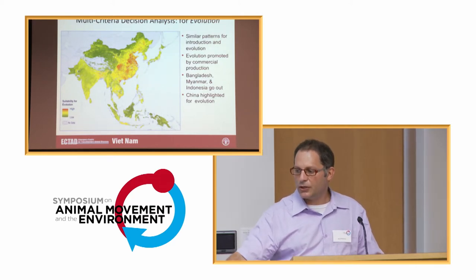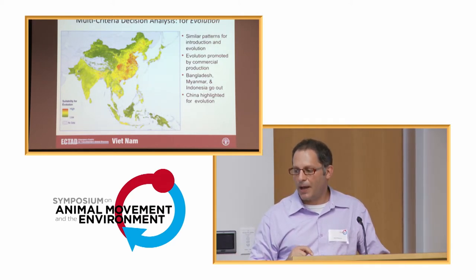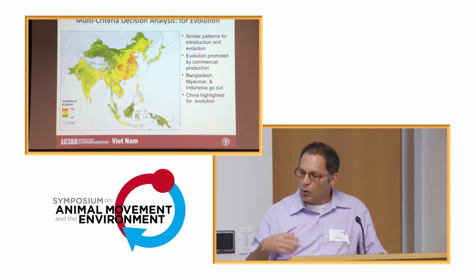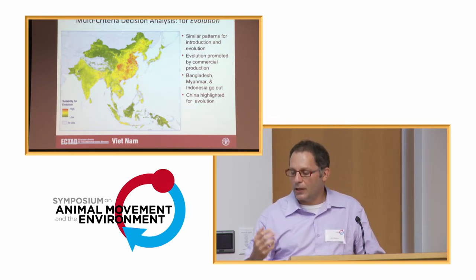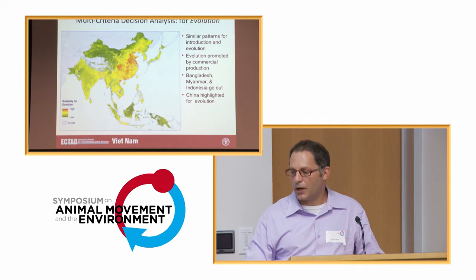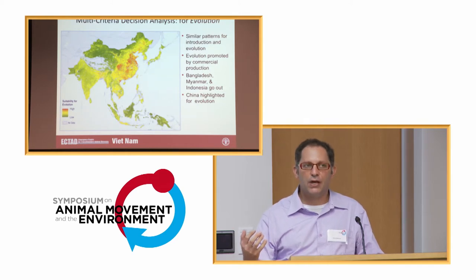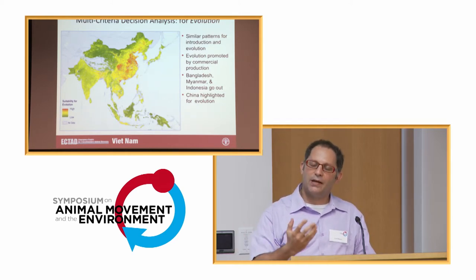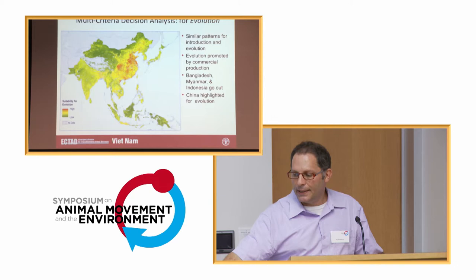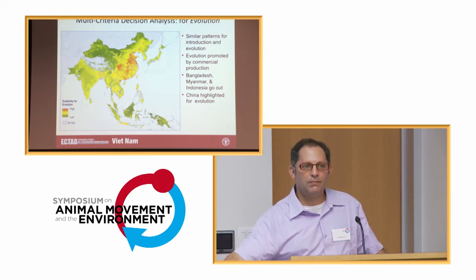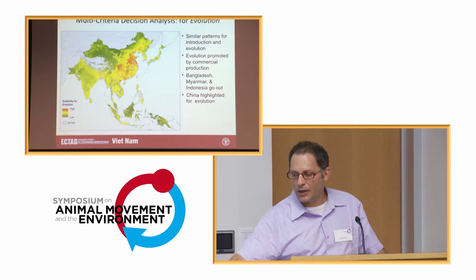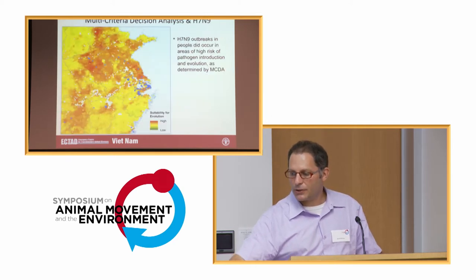For the evolution map, the difference we see is that higher risks are more associated with commercial production, and countries like Bangladesh, Myanmar, and Indonesia have dropped out of higher risk when we look at evolution compared to introduction. We also see China becomes a higher priority to focus on for potential high risk.